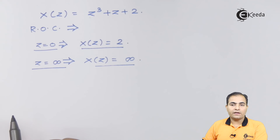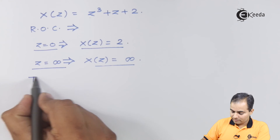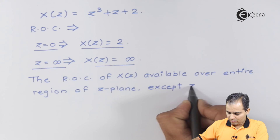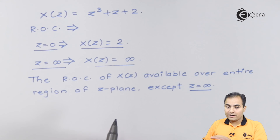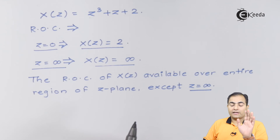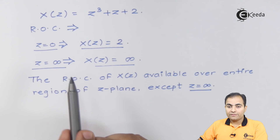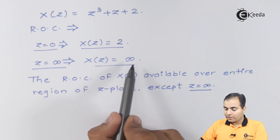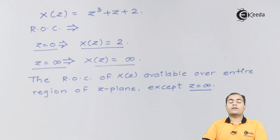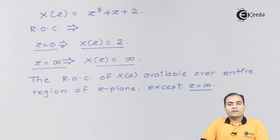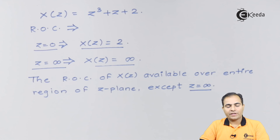The ROC of X(z) is available over the entire region of the z-plane, but excluding z equals infinity, because substituting z equals infinity gives an infinite result. That is the complete procedure for calculating the ROC of this function in Z-transform. That's all for now — thank you for watching, stay tuned with IKEDA and subscribe for further videos.